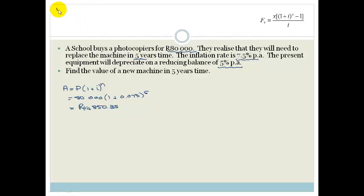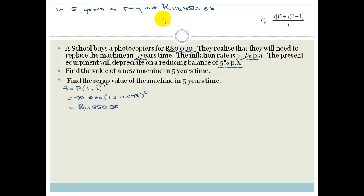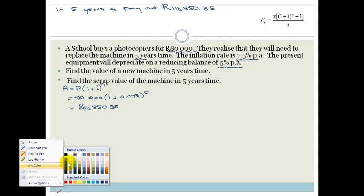So, what does that mean? That means that in five years, I will have to pay out the equivalent of R114,850.35. That's what a new machine is going to cost me in five years. Now, it says find the scrap value of the current machine in five years' time. So, let's change the color.